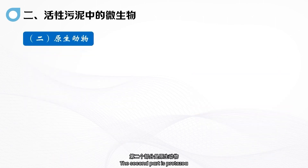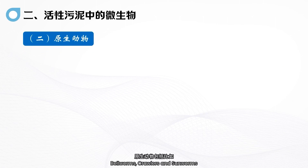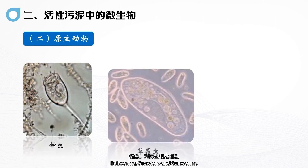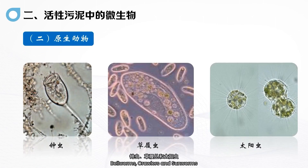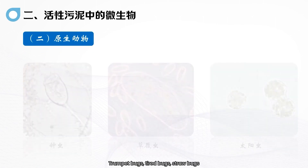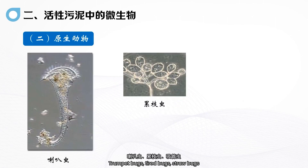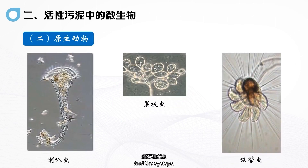The second part is protozoa. Protozoa include, for example, bellworms, crawlers, and sunworms. These pictures show trumpet bugs, tired bugs, straw bugs, and cyclops.